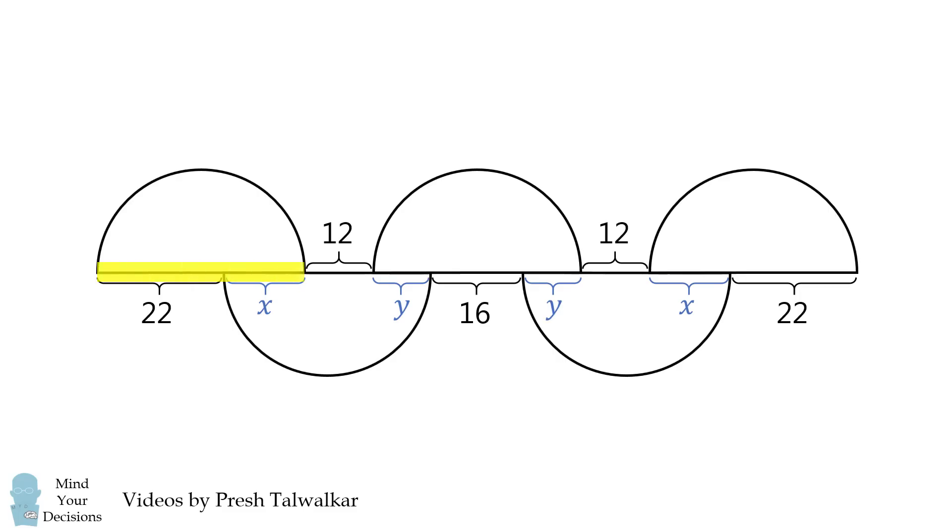Now let's consider the length of this diameter. It's equal to 22 plus x. Here we'll have another expression for the diameter. It'll be x plus 12 plus y. We have two different ways to express the diameter so they're equal to each other.